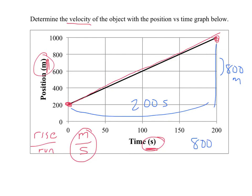So 800 meters divided by 200 seconds gives us a velocity of 4 meters per second. That is the velocity of this object.